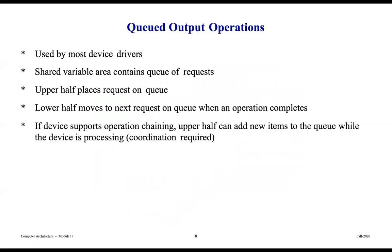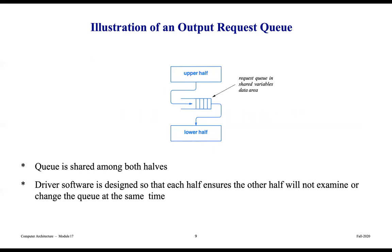What about queued output operations? This is used by most device drivers. The shared variable area contains a queue of requests. The upper half places requests on the queue, and the lower half moves to the next request on the queue when an operation completes. If the device supports operation chaining, the upper half can add new items to the queue while the device is processing. The queue is shared among both halves, and the driver software ensures each half does not examine or change the queue at the same time.